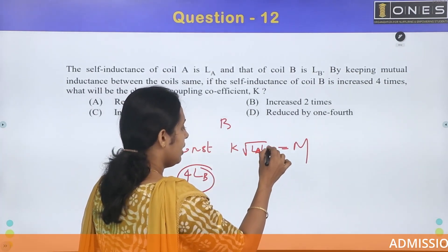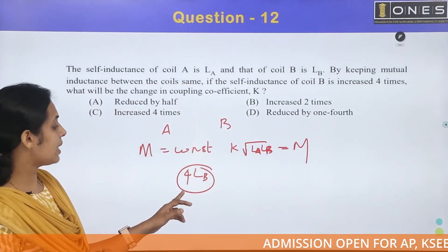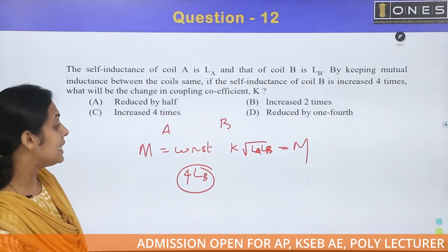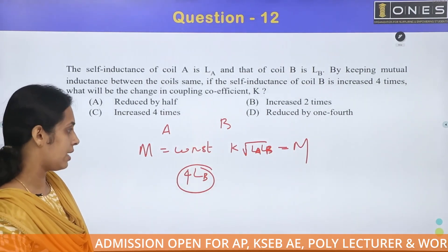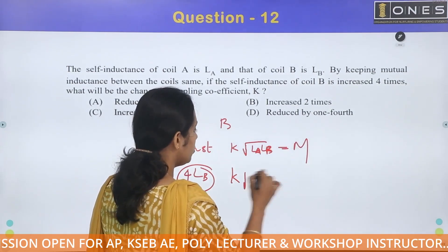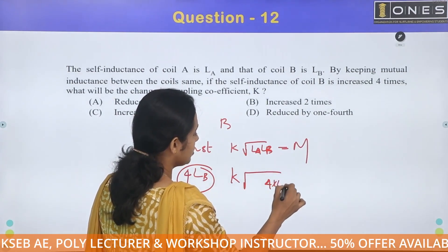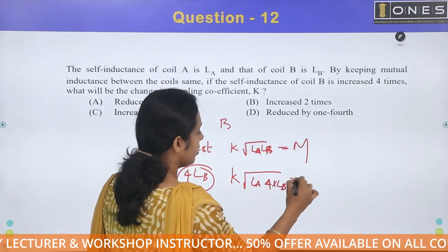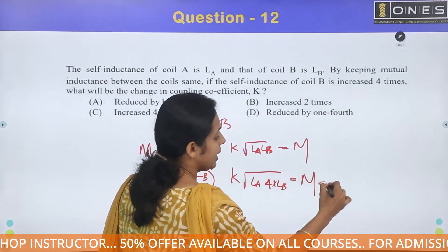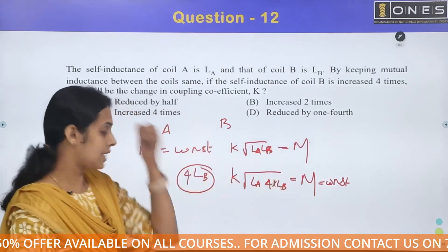Now, keeping M constant, the new expression becomes M = K_new × √(LA × 4·LB). Since √4 = 2, we get M = K_new × 2 × √(LA × LB). Comparing with the original M = K × √(LA × LB), we find that K_new = K/2.